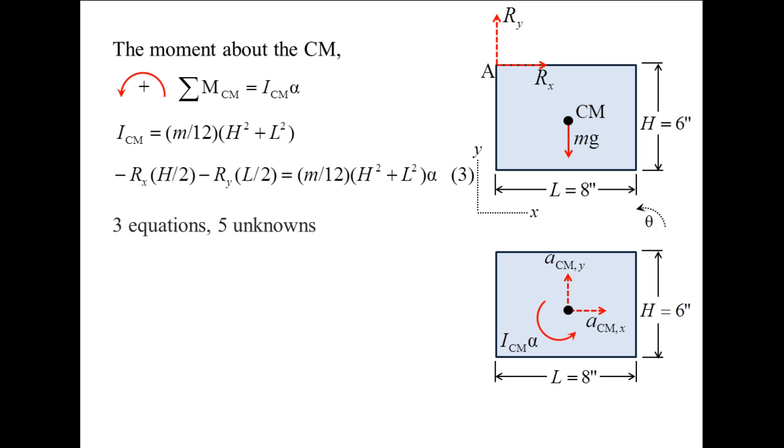We have used the three equations of motion, but have five unknowns: Rx, Ry, alpha, and the two components of the acceleration of the center of mass.